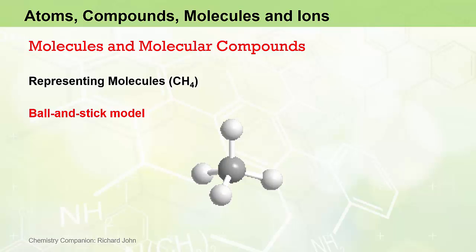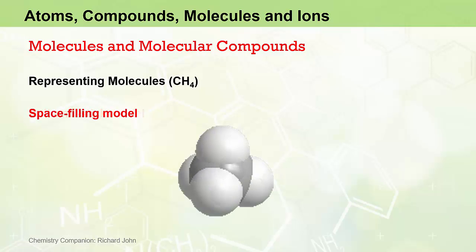The covalent bonds that bind atoms in a molecule are not actually stick-like, but are the result of the sharing of electrons from electron clouds of each atom involved in the bond. For this reason, space filling models are best for estimating the overall shape of a molecule, and are used to demonstrate the relative size and shape of the electron cloud of each atom involved. They also show the extent of overlap of these electron clouds in the covalent bonds holding the molecule together.